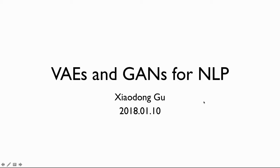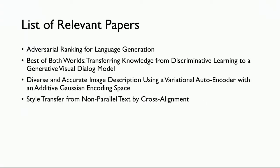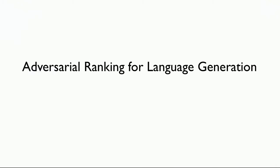I will share papers about VAEs and GANs for natural language processing. I will choose four relevant papers. The first paper is about Adversarial Ranking for Language Generation.